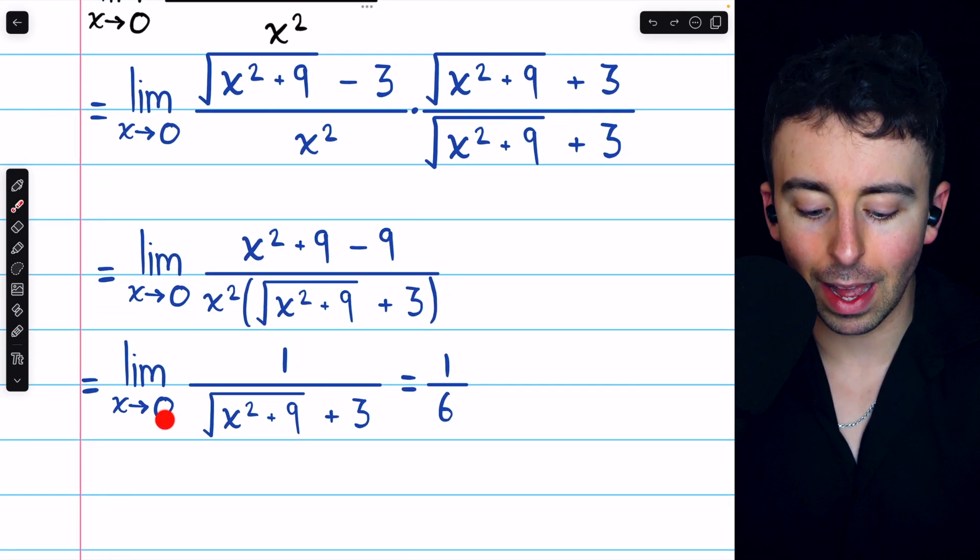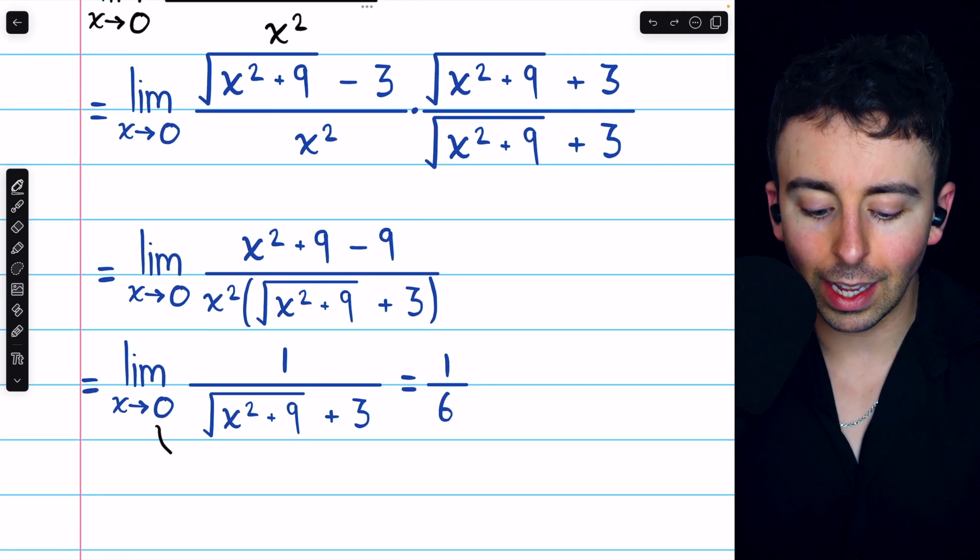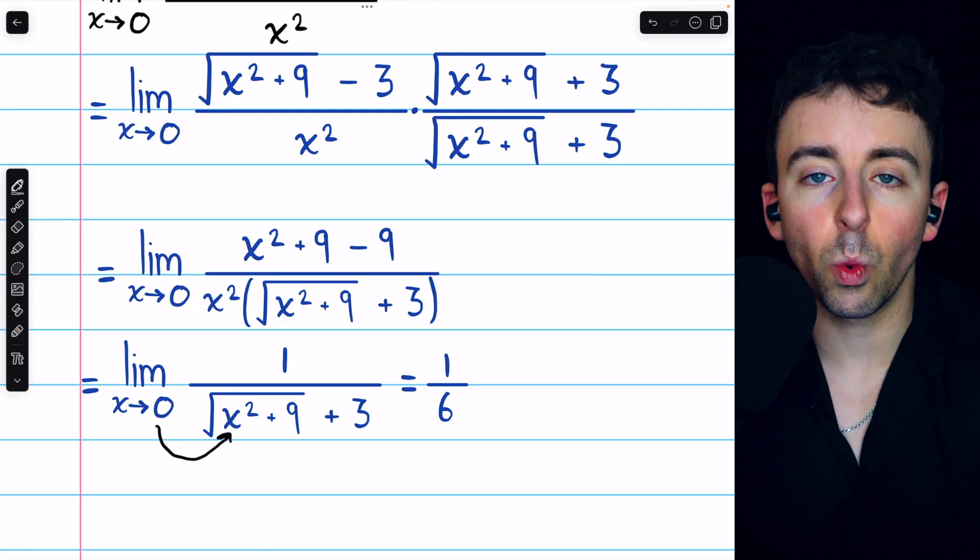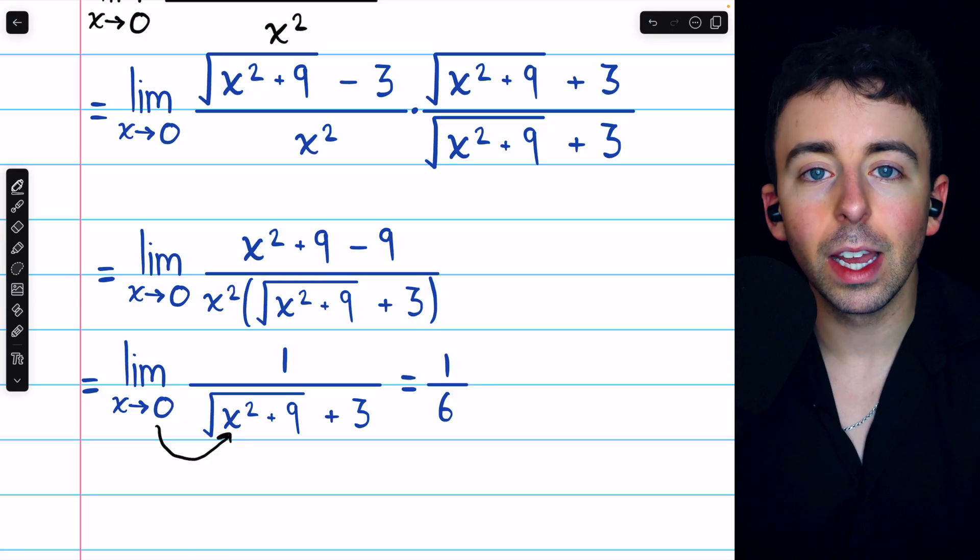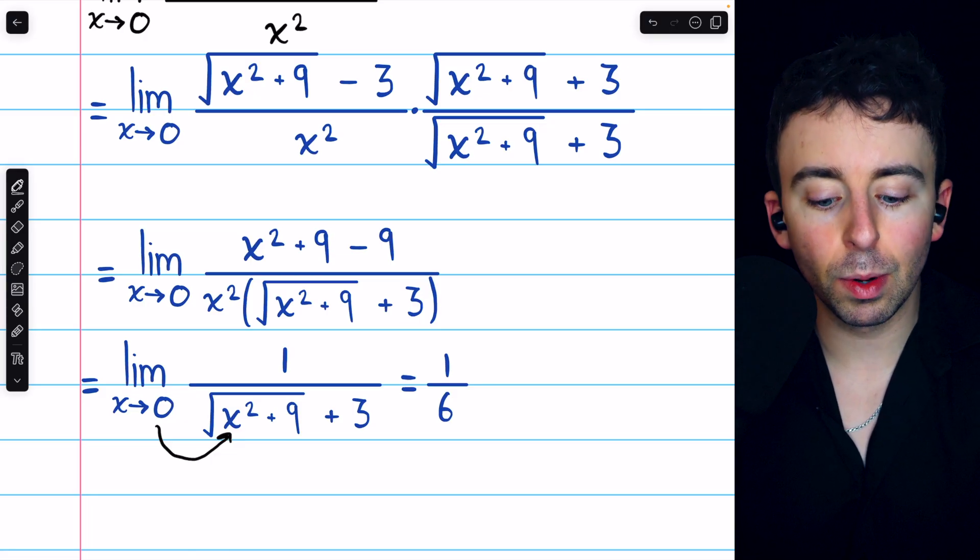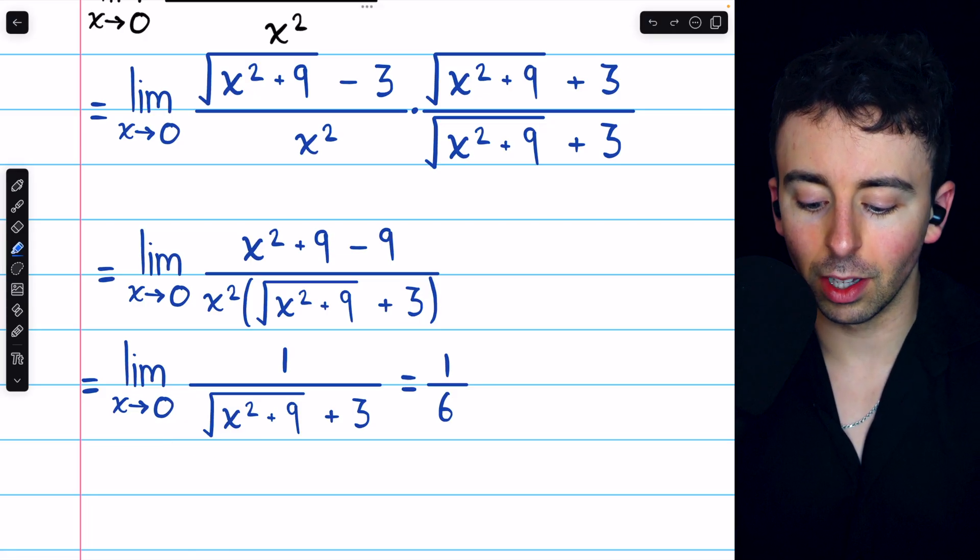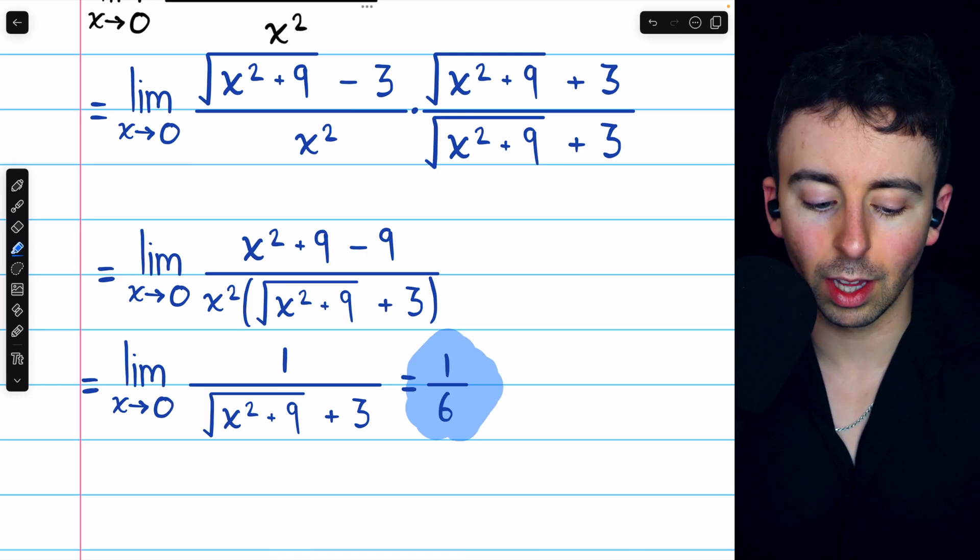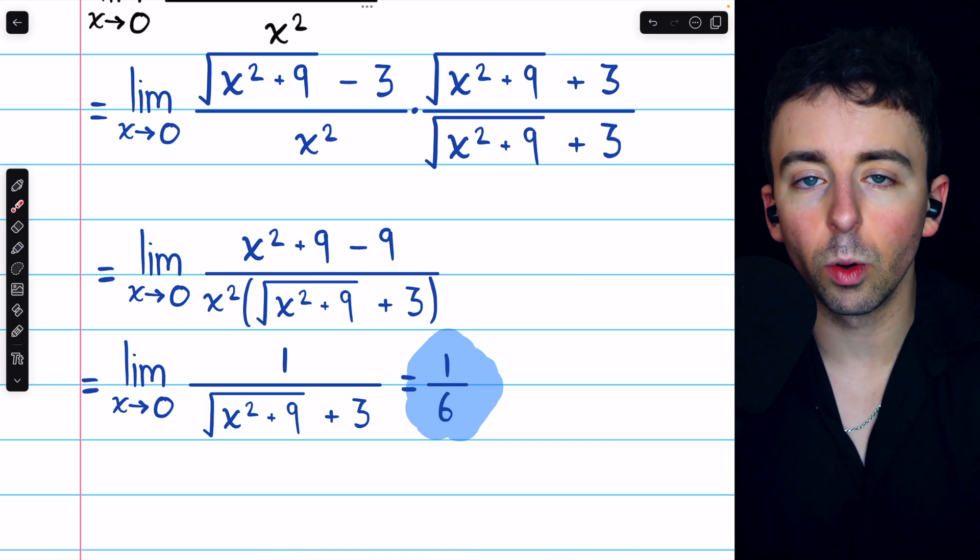we can evaluate the limit by direct substitution. Plugging in x equals 0, we get 1 over the square root of 9 plus 3. The square root of 9 is 3, and 3 plus 3 is 6. So the limit approaches, or rather the limit equals, 1 over 6.